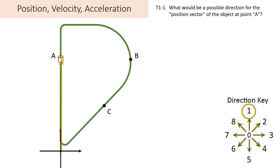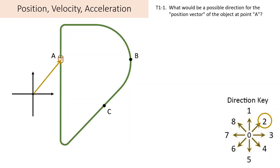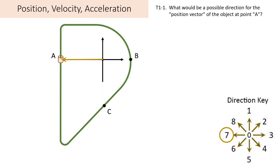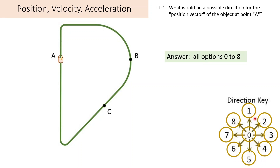But if we move the coordinates, we could put the origin of coordinates below point A, then the position vector goes up from the origin to point A — so we can get option 1. You start to see that the position heavily depends on where you placed your coordinates. I can get option 2 by placing the coordinates here, option 7 to the left. And finally, I could be at the origin — the zero vector — so 0 could be a choice. Every possible direction in the direction key could be the direction of position, because the choice of coordinates was left up to us.